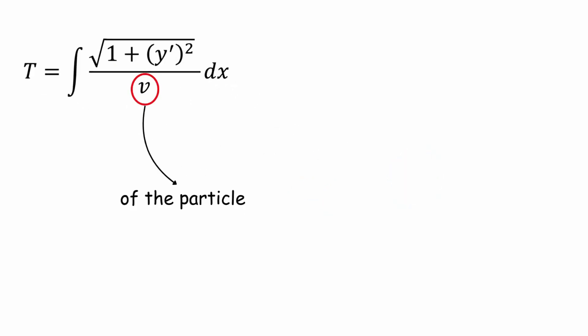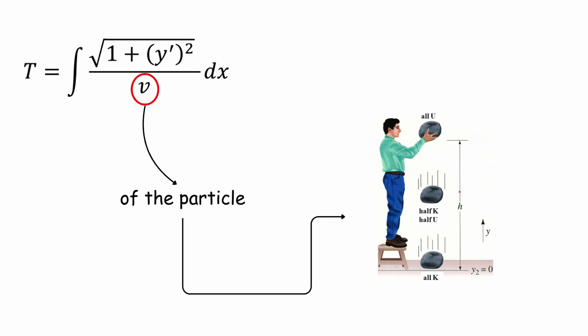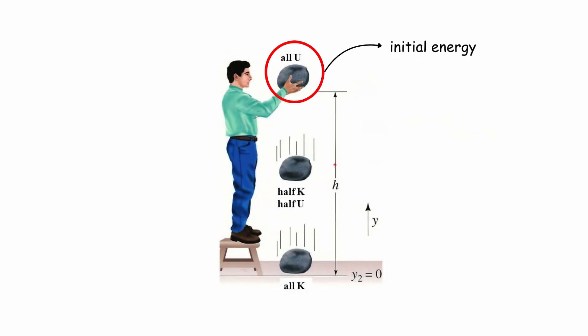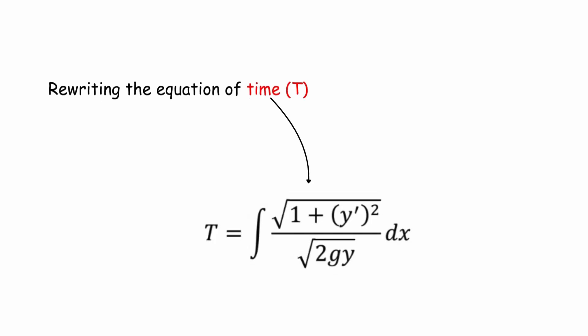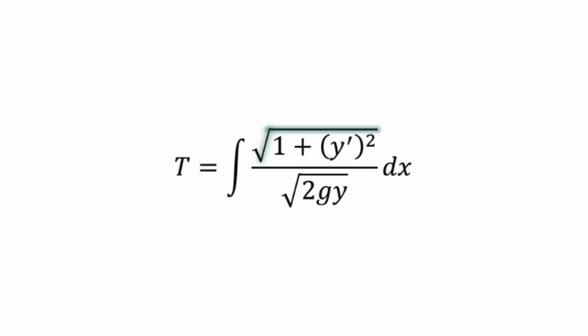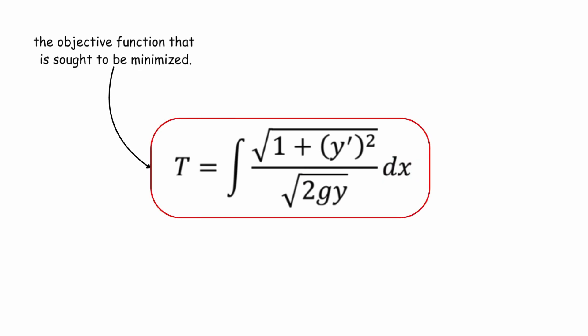The velocity v of the particle is given by the conservation of mechanical energy. Since part of the initial energy is converted into kinetic energy as the particle descends, we have mgy = ½mv². Solving for v: v = √(2gy). Rewriting the equation of time: t equals integral of √(1 + y'²) / √(2gy) dx. This is the objective function that is sought to be minimized.